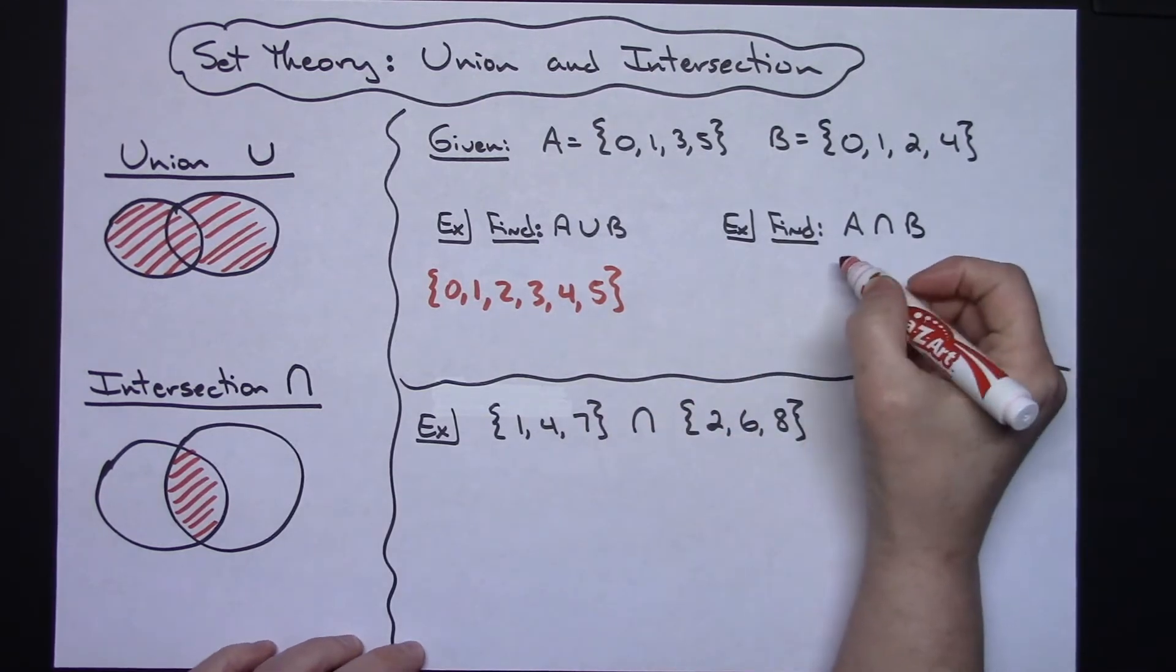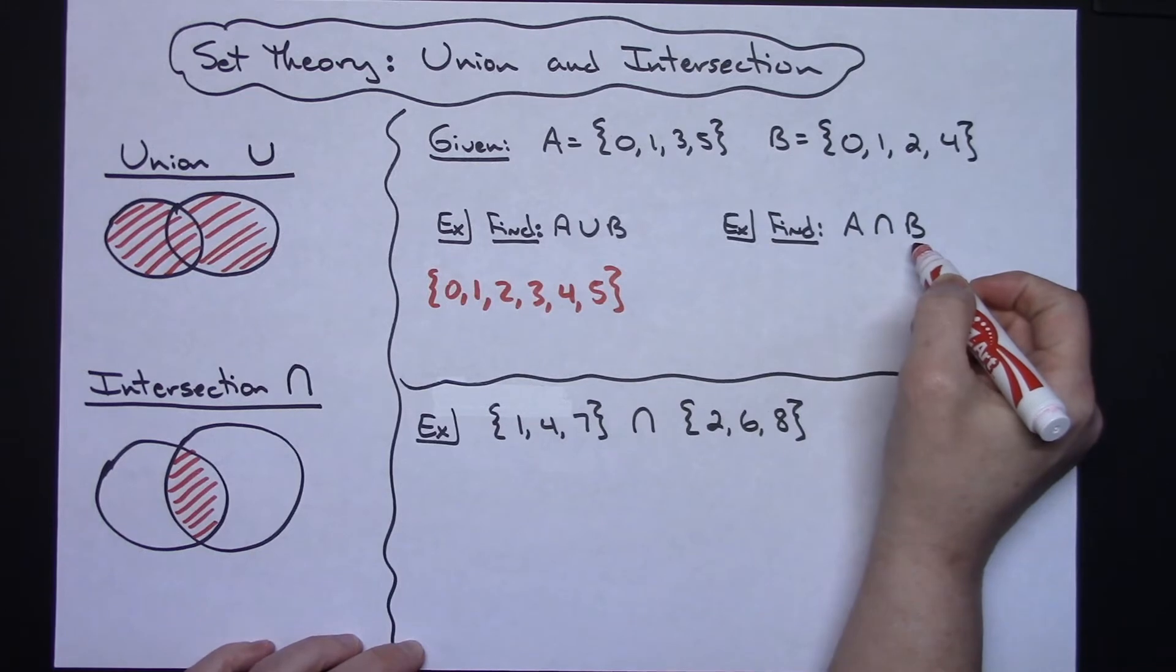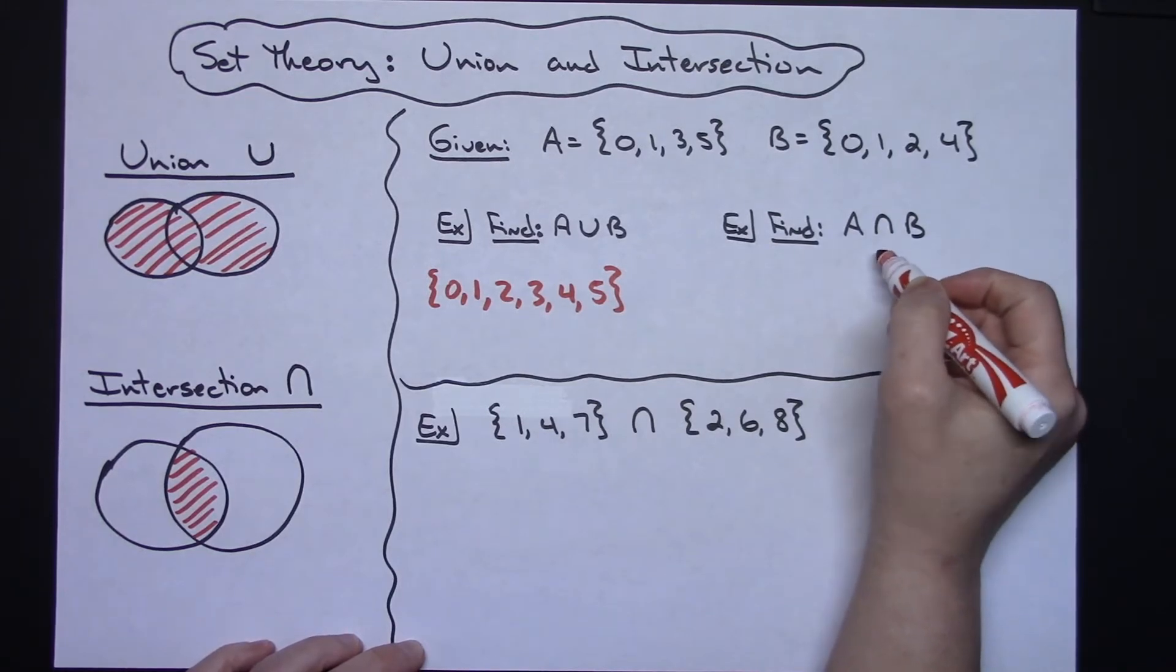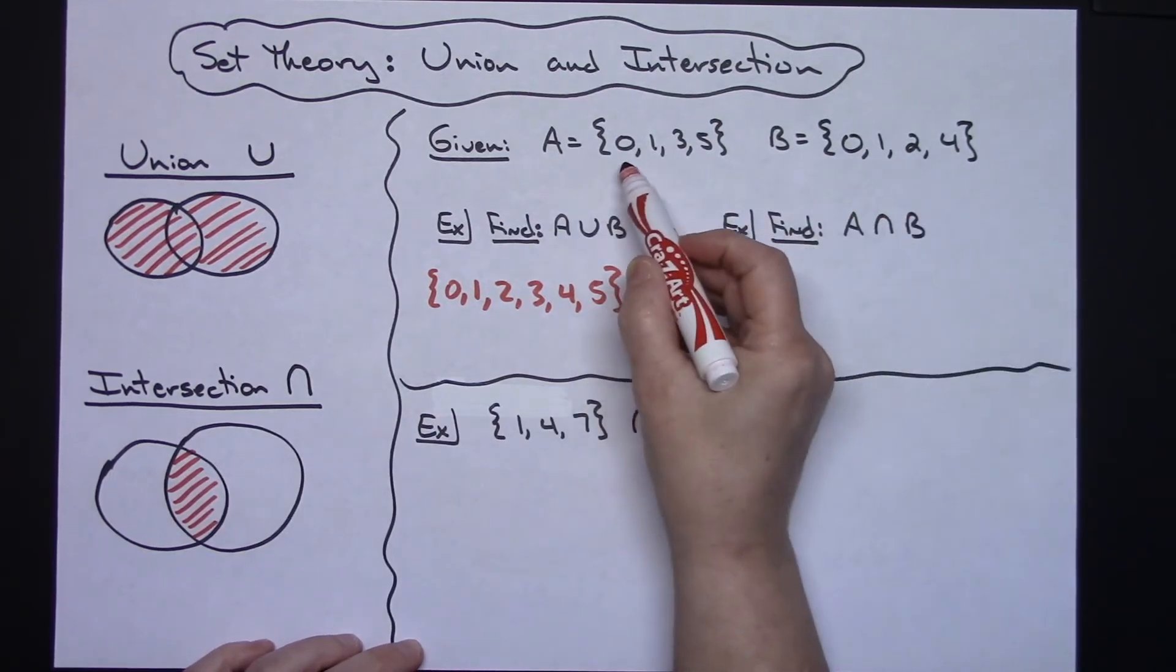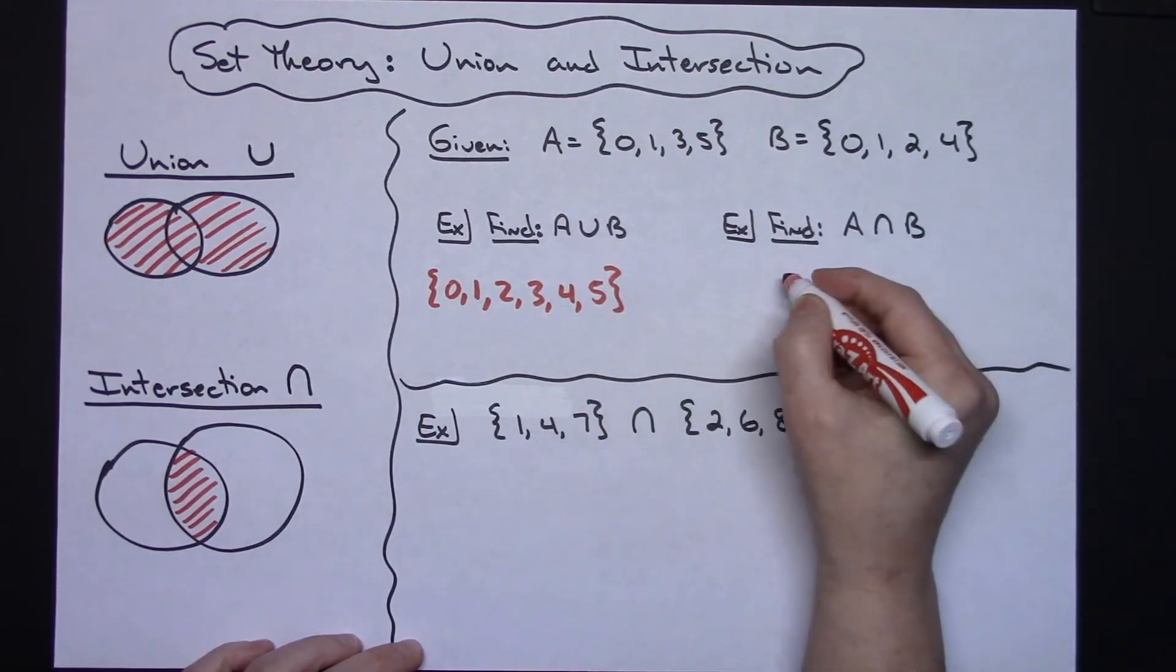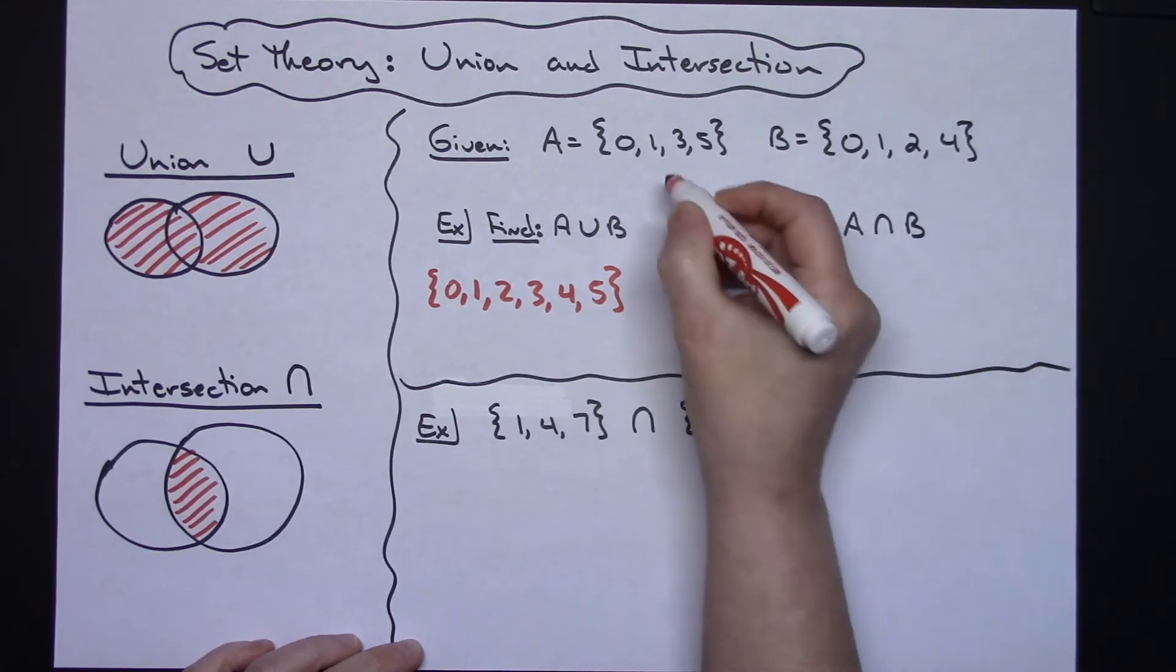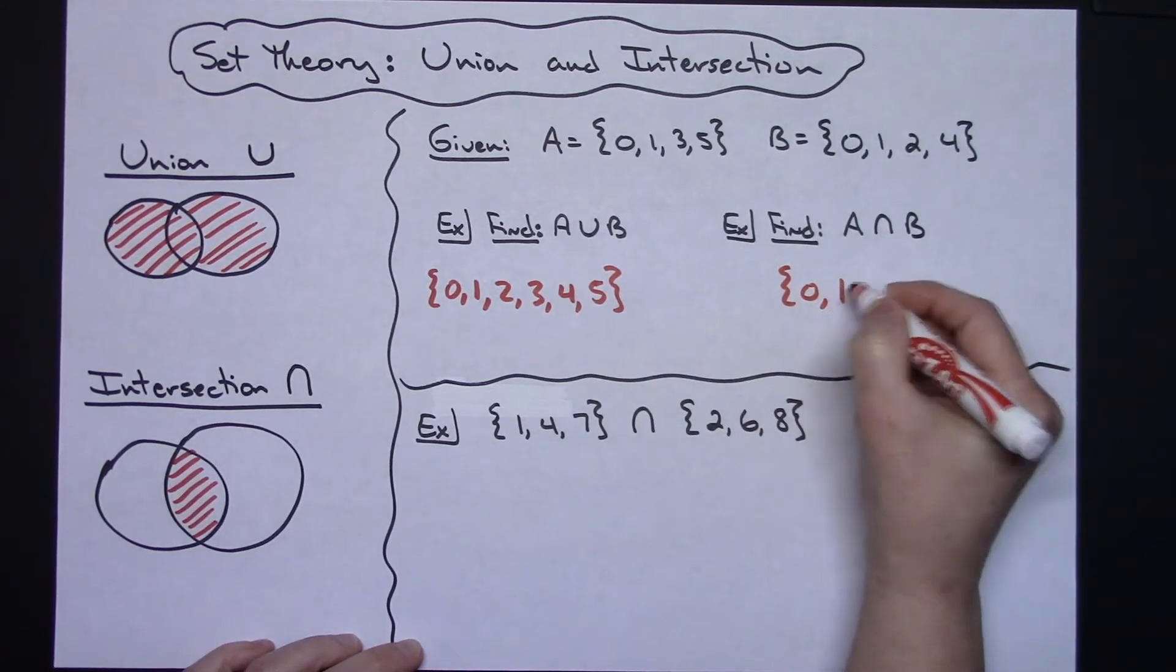As a second example, if I wanted to find A intersect B, I want to find those numbers which are in both sets. So we look through there: 0 is in both sets and 1 is in both sets, and that's all that is in both sets. So there is my intersection.